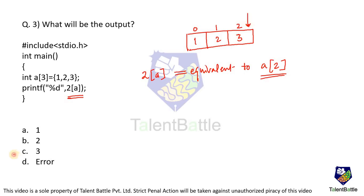So 3 will be printed and the output is option C. The logic lies in understanding that 2[a] or 1[a] can be written as a[2] or a[1]. A detailed understanding of array processing will help you solve these questions.